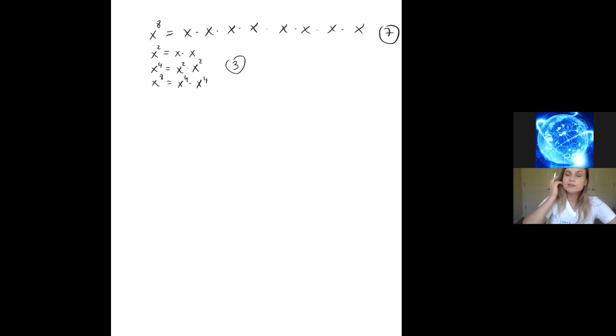The idea is that we want to reduce the number of multiplications as much as possible. A great algorithm for that is what we call the square and multiply algorithm. This algorithm uses this idea that I just presented.